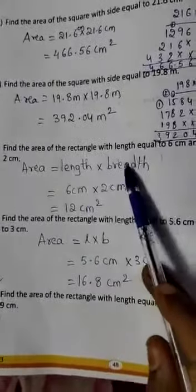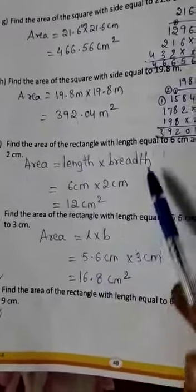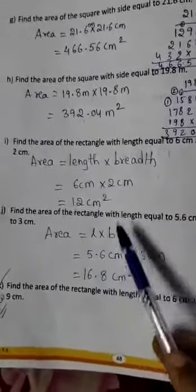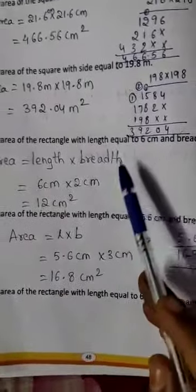So, L into B. Length is shortcut L. Breadth is B. So, length into breadth. Length is 6 cm.